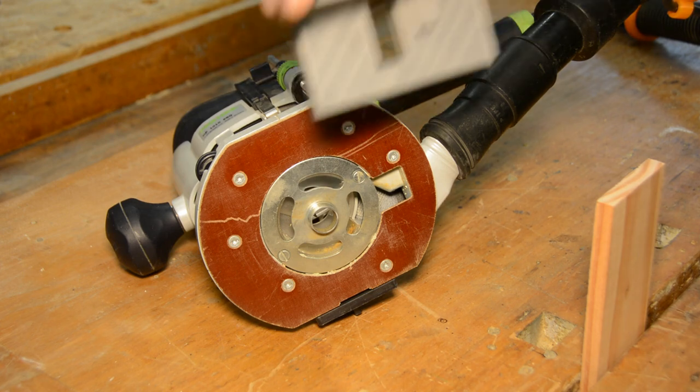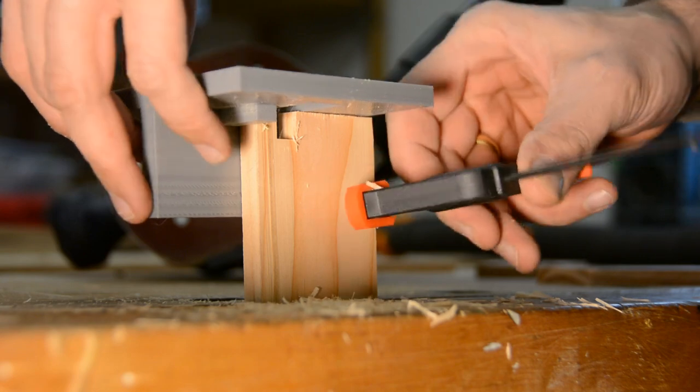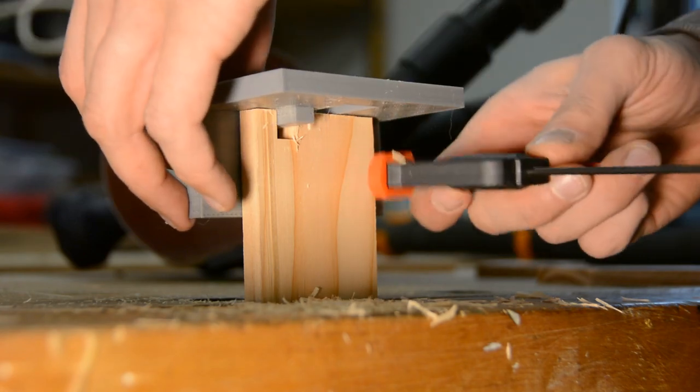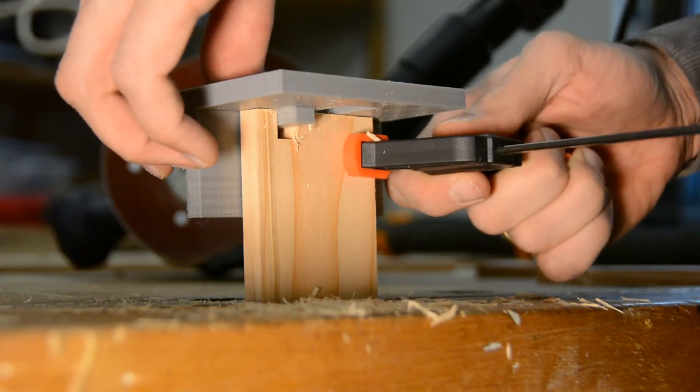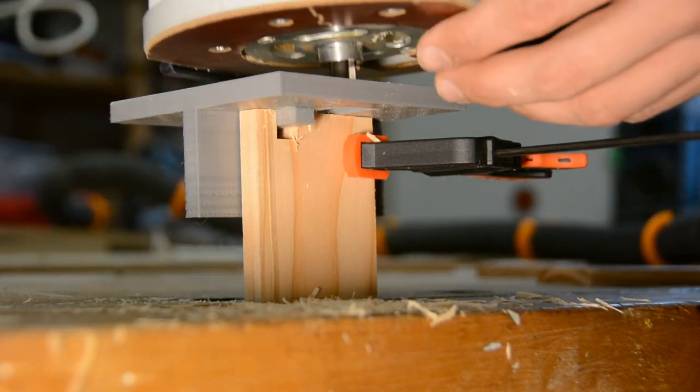With a guide bushing riding in this slot we can route the first finger. The pin on the underside then registers in this slot and we can continue to create more fingers. A very simple setup and easy to use.